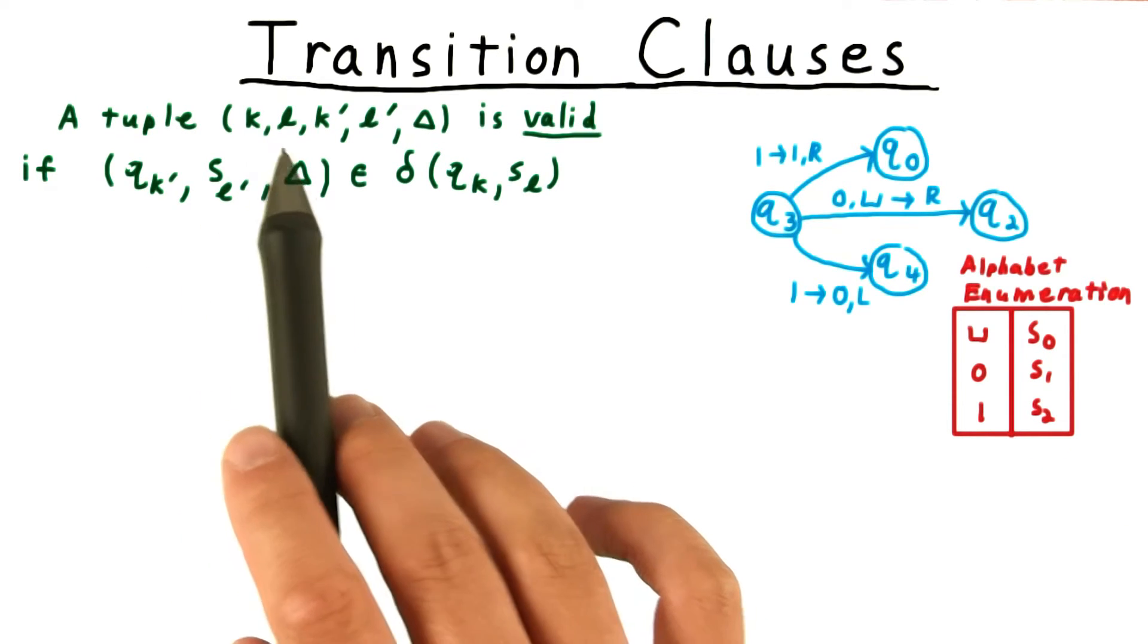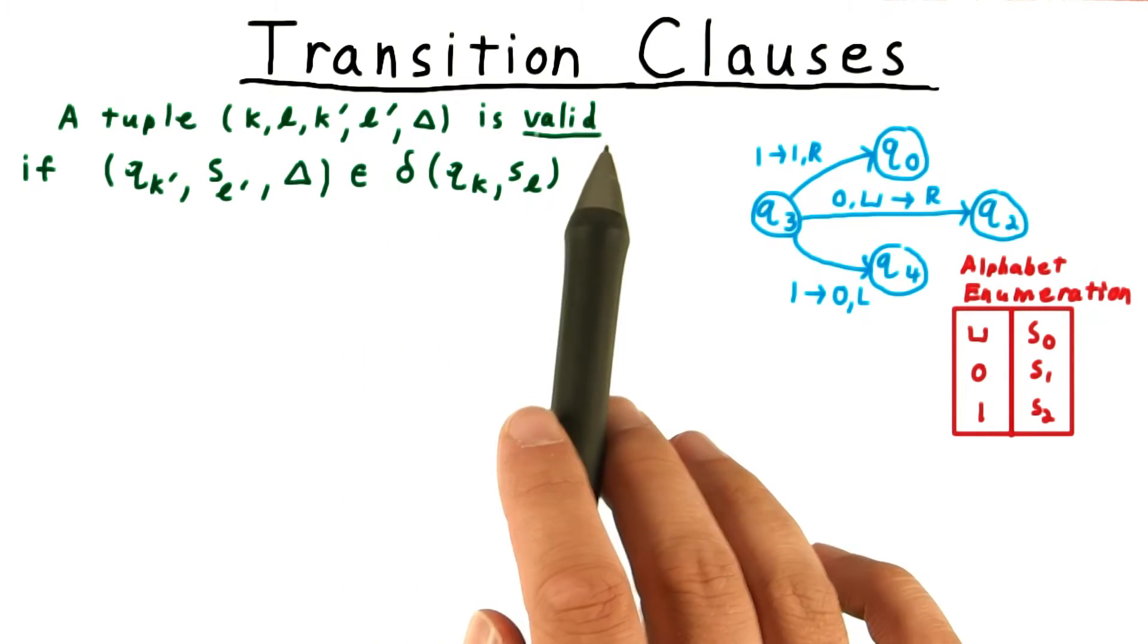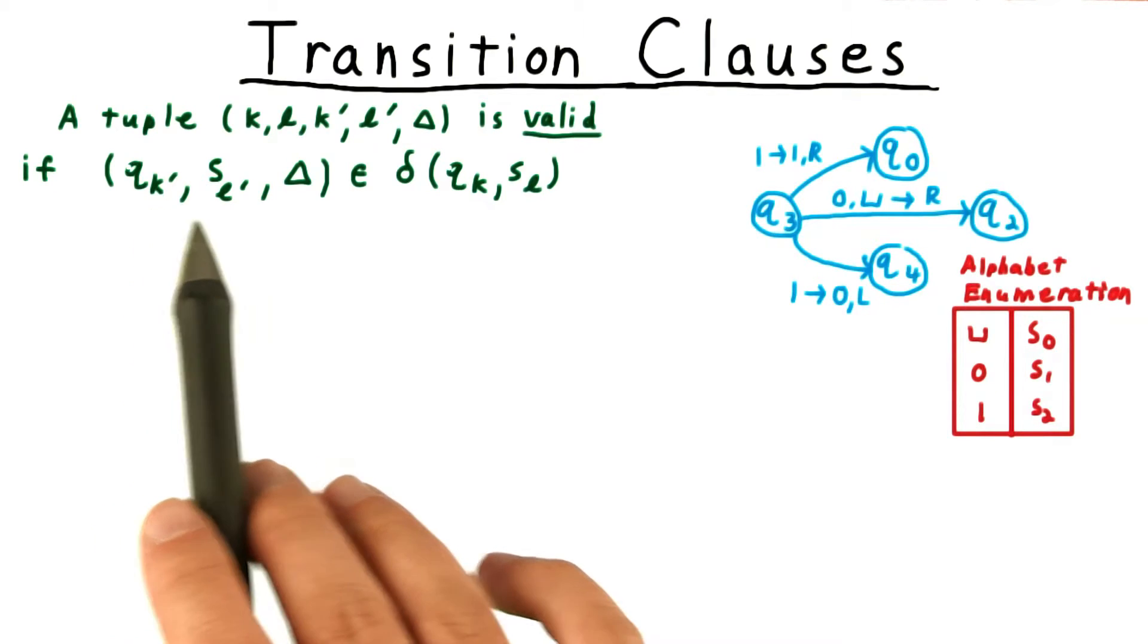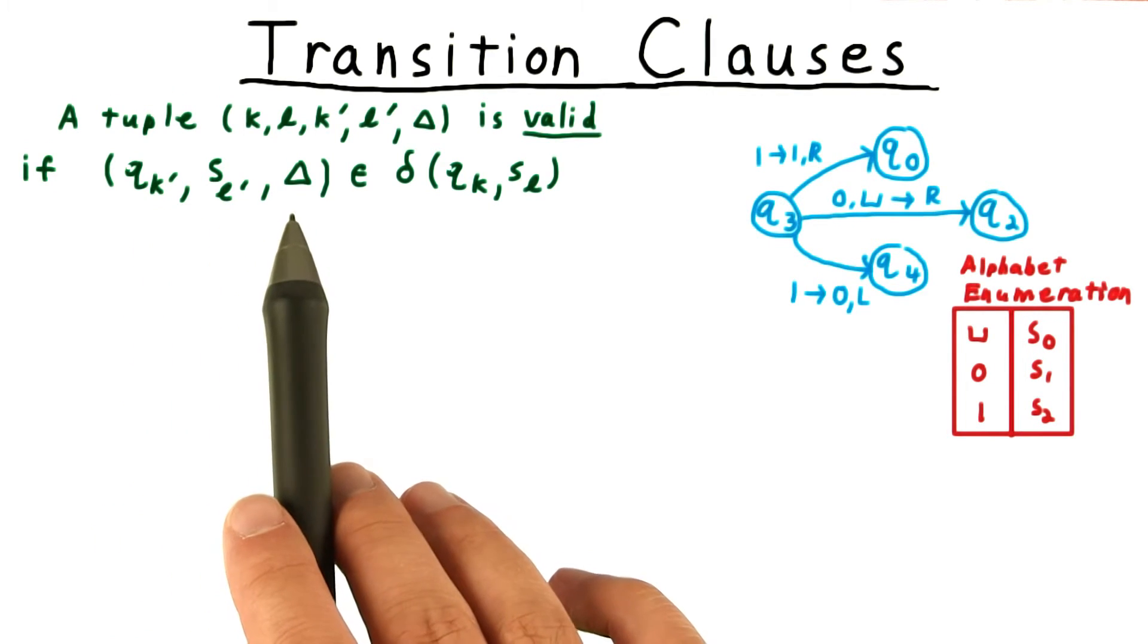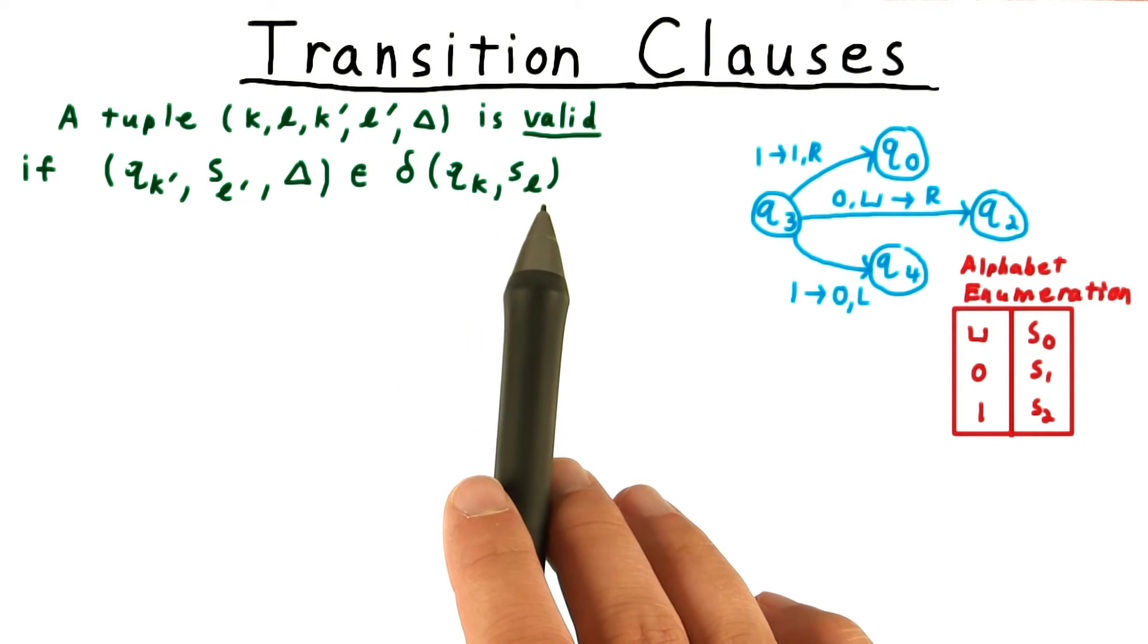Next, we define the tuple k, l, k prime, l prime, delta to be valid if the triple of the state q, k prime, s, l prime, and delta is in the set delta of q, k, s, l.